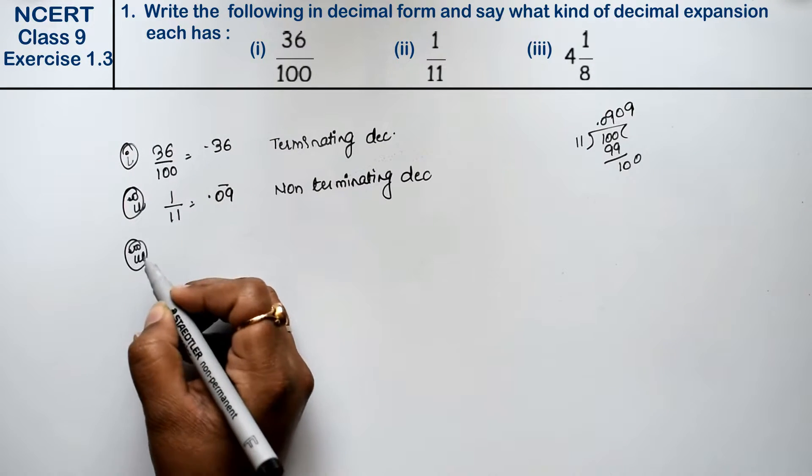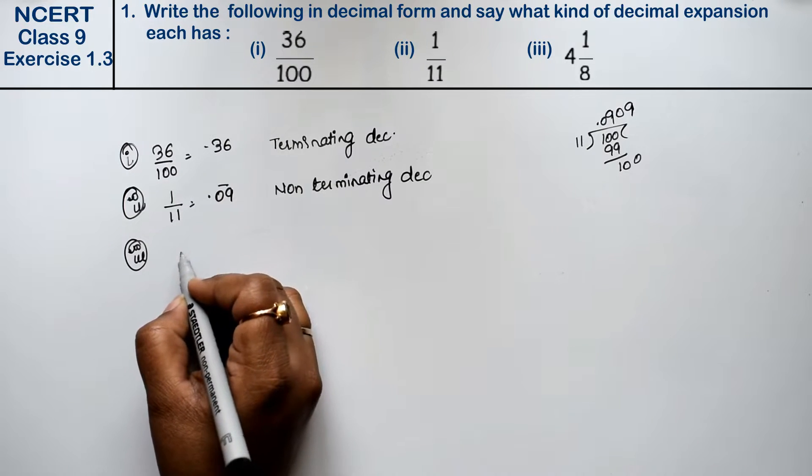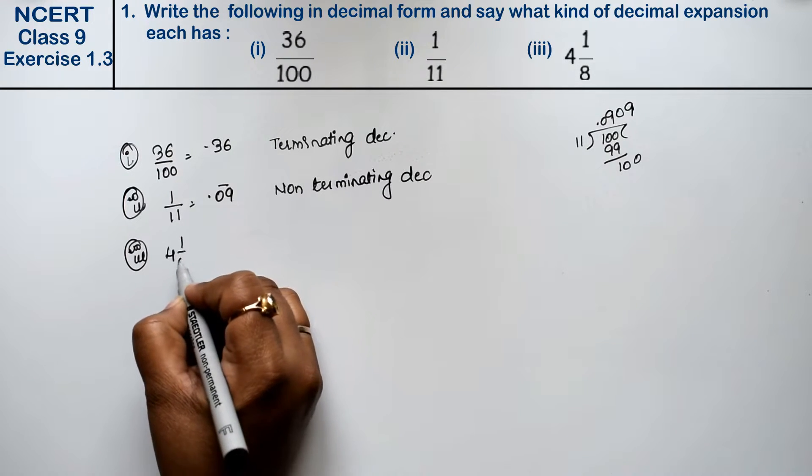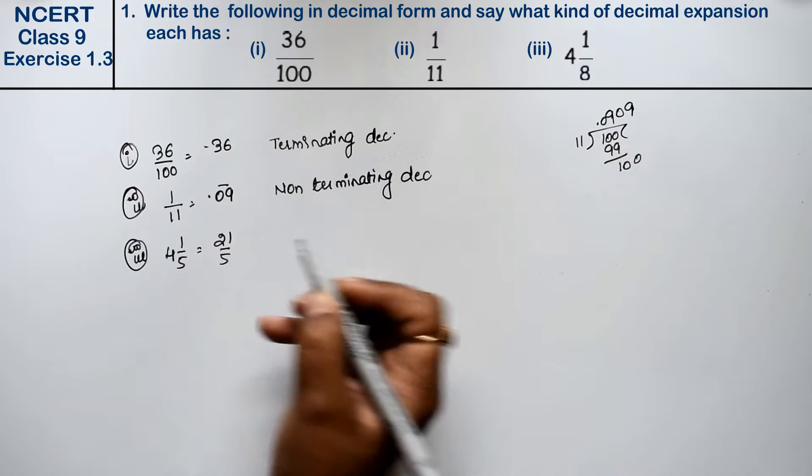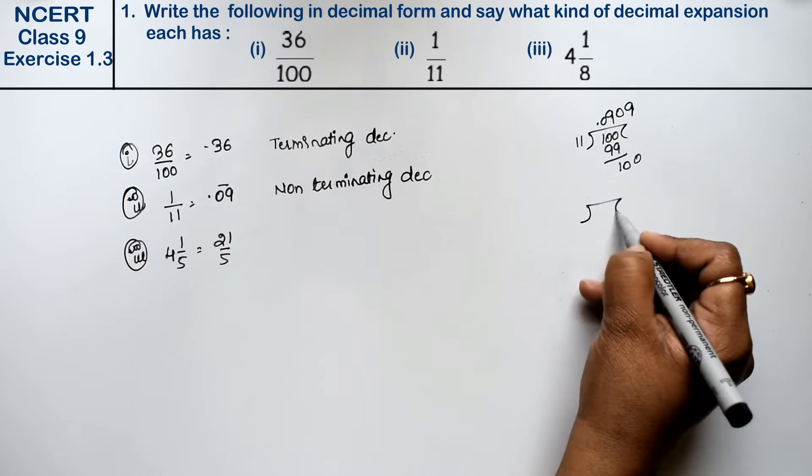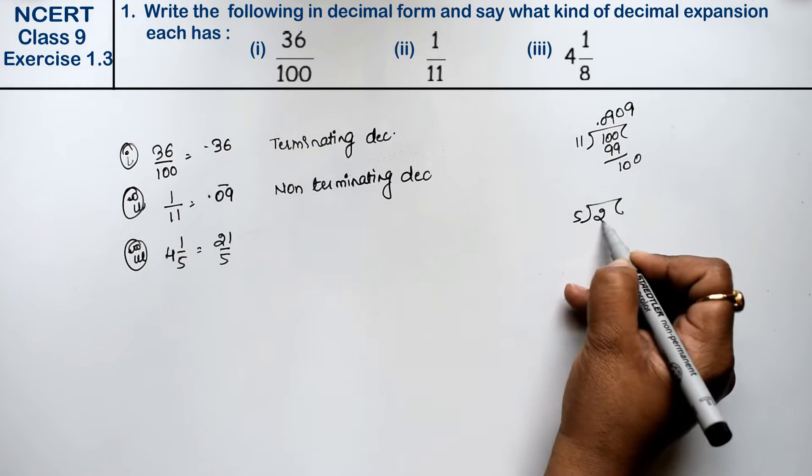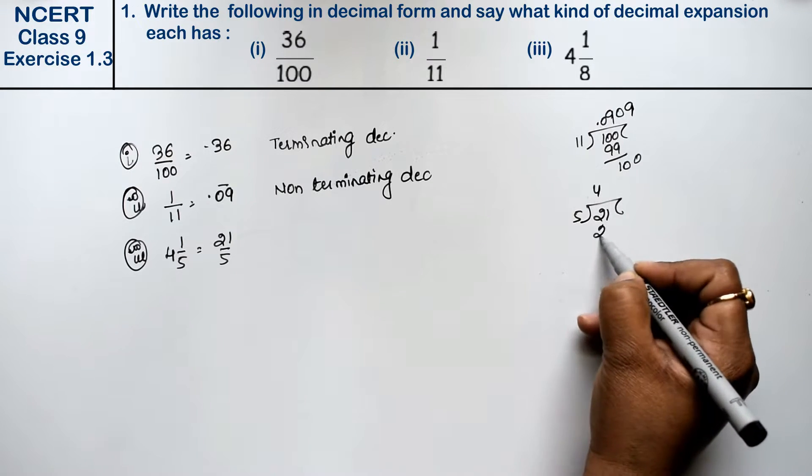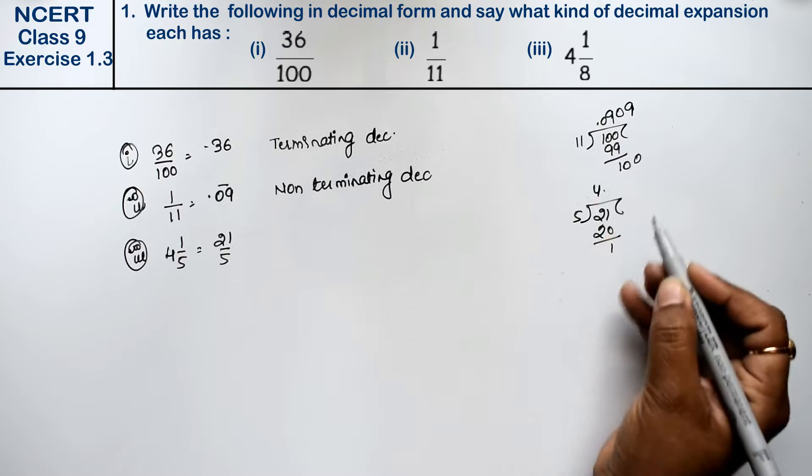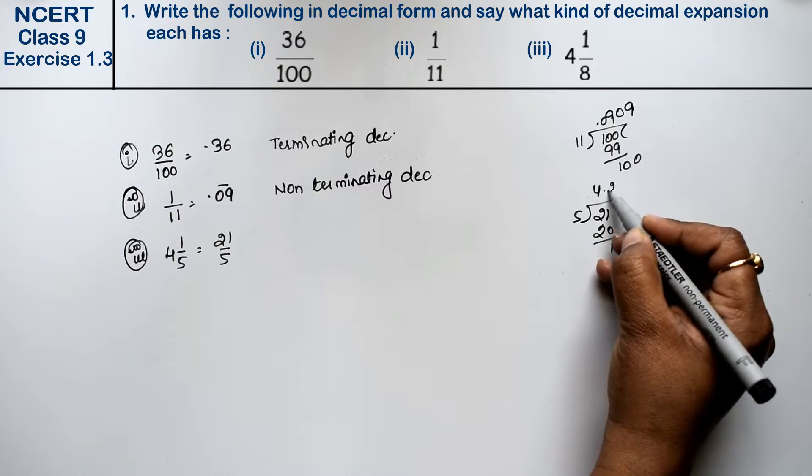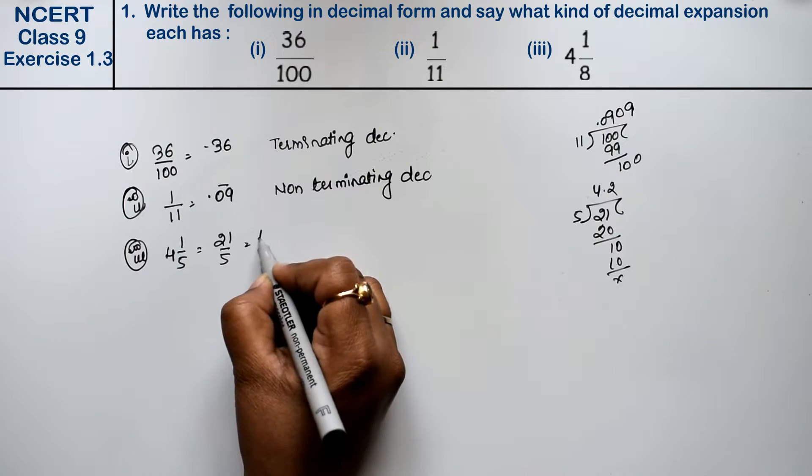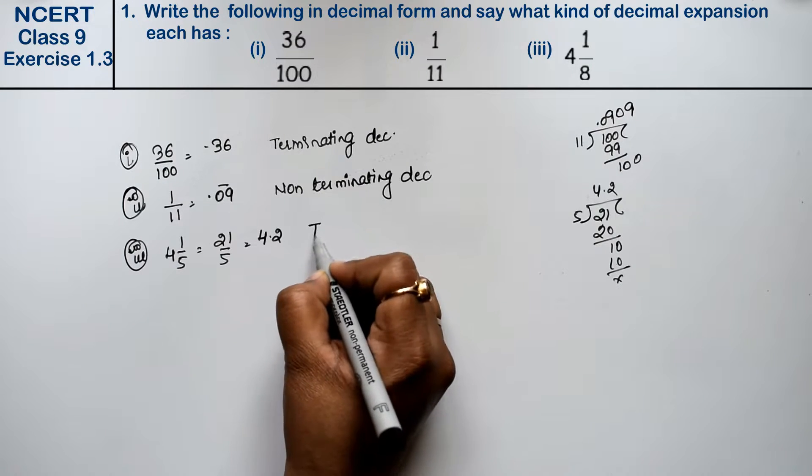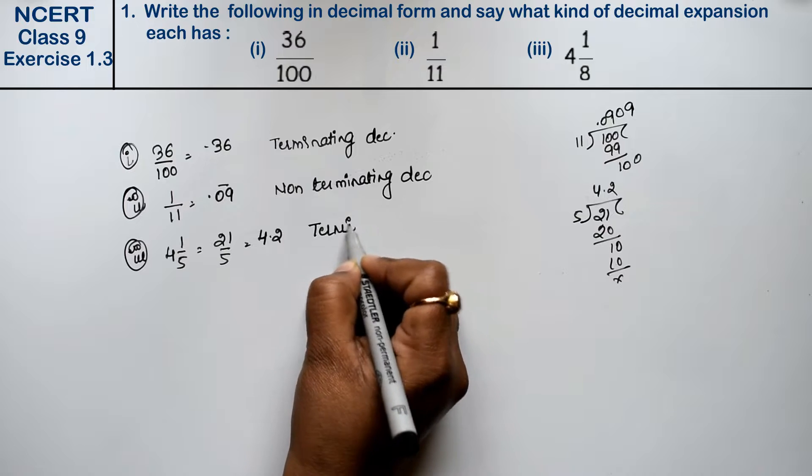Let's do third part. Third part is 4 whole 1 upon 8. So how is this? Now divide it. 8 into 21. So 4 is 20, 1 is 0. 20, since point, 0 is 0. 8 into 20. So this is 4.2. That means it's a terminating decimal.